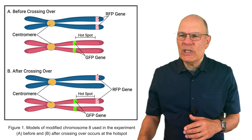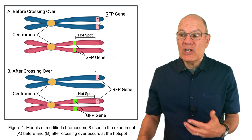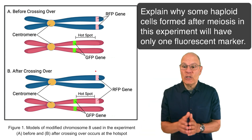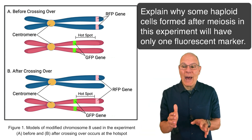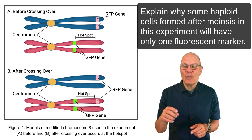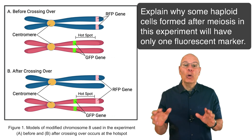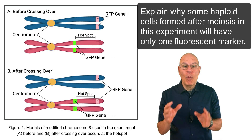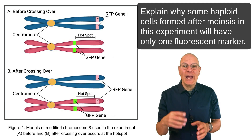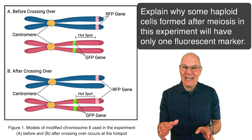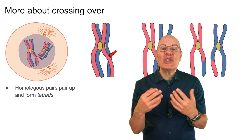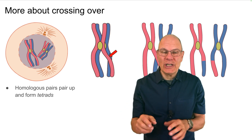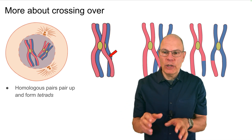Your job is to explain why some haploid cells formed after meiosis in this experiment will only have one fluorescent marker. Give that a try, then hear my explanation. Because crossing over is essential to understanding this question, I want to talk about it in a bit more detail.